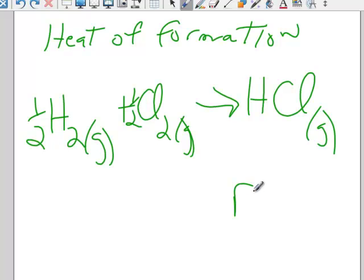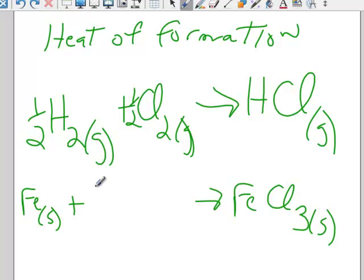If I had something like FeCl3 solid, I might write Fe solid plus 3 halves Cl2 gas gets me FeCl3 solid. It doesn't matter whether it would happen in real life or not. It's the elements in their most stable state heading to the compound. By definition, elements in their most stable state have a heat of formation of zero.